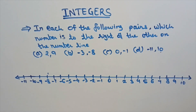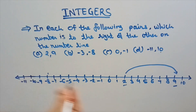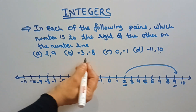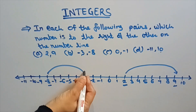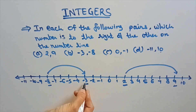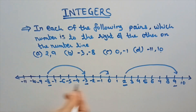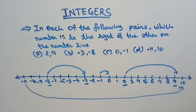In this example, in each of the following pairs, which number is to the right of the other on the number line? First: 2 and 9 — 9 is to the right of 2. Second: minus 3 and minus 8 — minus 3 is to the right of minus 8. Third: 0 and minus 1 — 0 is to the right of minus 1. Fourth: minus 11 and 10 — 10 is to the right of minus 11.